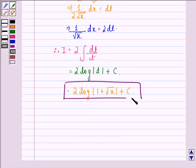We put back the value of t as 1 plus square root x and we get 2 into log of mod 1 plus square root x plus the constant c. So this is our answer to this question.